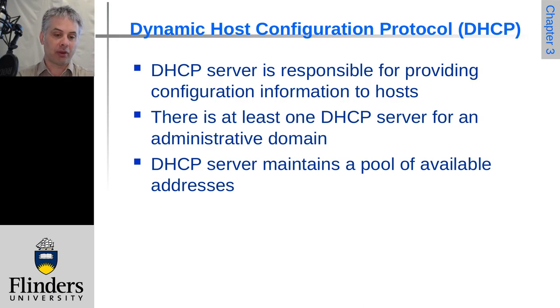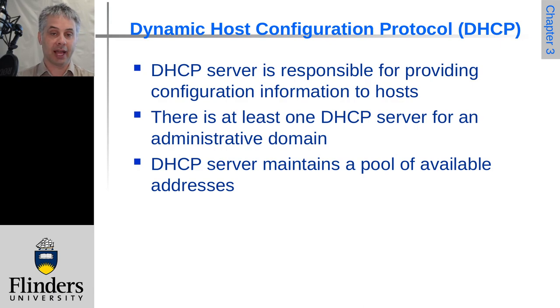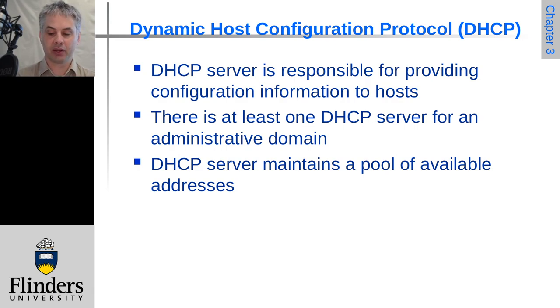At the simplest level, the DHCP server maintains a pool of available IP addresses that can be allocated out on request when a computer joins the network.